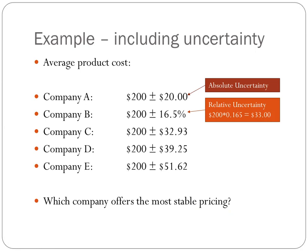In addition to the mean value, we need to know the uncertainty about that mean value. Here, we have listed for each of the five companies the mean price of $200, and then the variability — plus or minus some additional value about the mean. It's important to note that there are two ways variability can be expressed. One way is absolute uncertainty, which is in the same units as the mean value. The second way is relative to the mean value. For company B, the relative uncertainty is expressed as a percentage of the mean. To convert to absolute uncertainty, we take 16.5% and multiply it by $200, giving us an absolute uncertainty of $33.